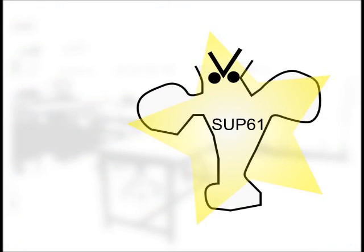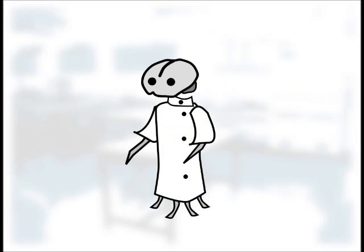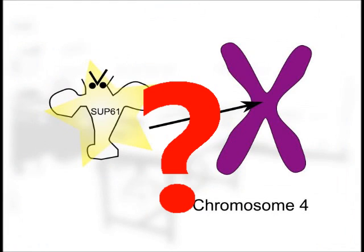I'll give them credit for trying to change structure of SUP61, to try and make it more resistant to transposon attack. But did it work? We don't know, because they didn't actually test it. They hid the gene away on chromosome 4, and it's never seen or heard from again.